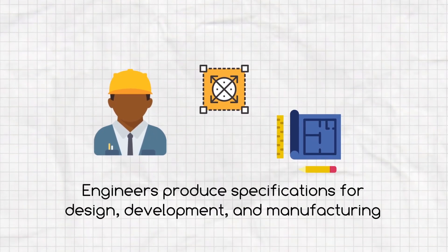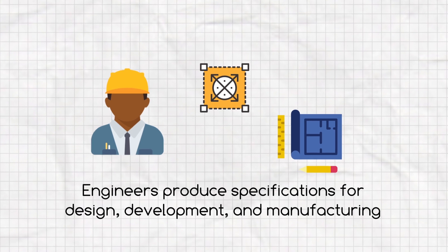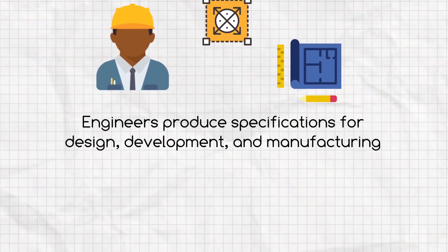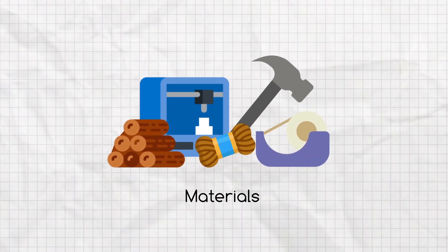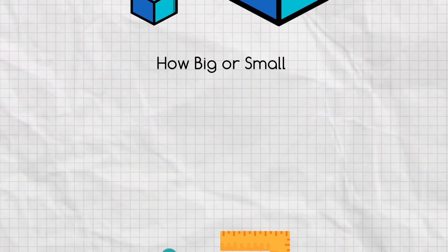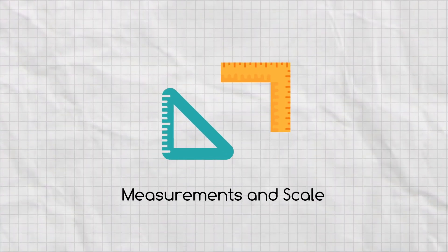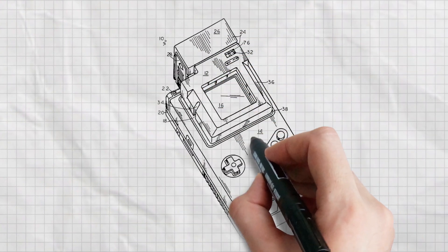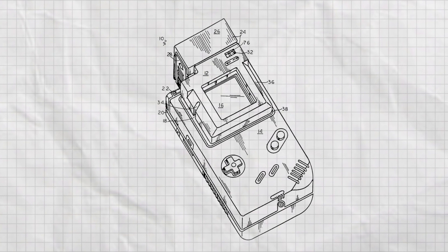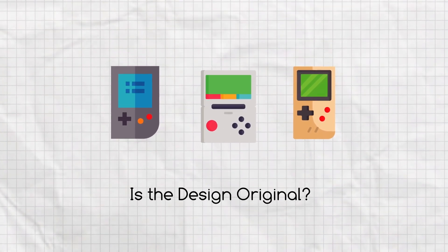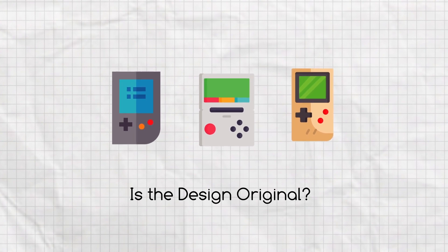Engineers produce specifications for the design, development, and manufacturing of something. They think about what materials or objects they will use to build the prototype, how big or small it will be, and the measurements or scale of the prototype. Engineers and designers both share what a prototype will look like through sketching and drawing. They think about how original their prototype design is compared to other inventions already in stores.